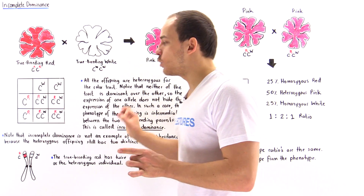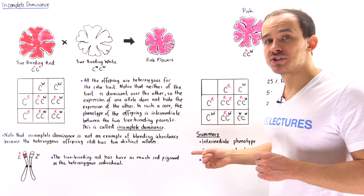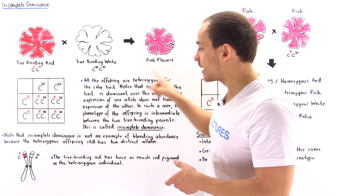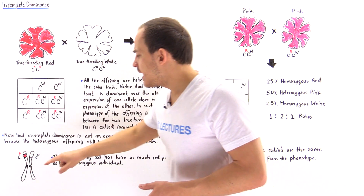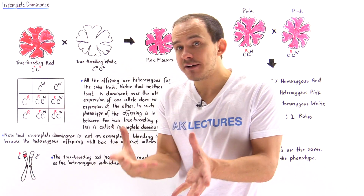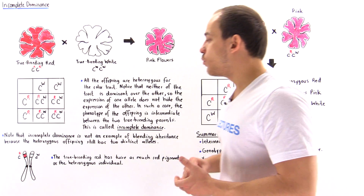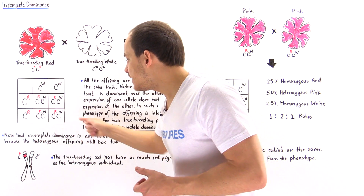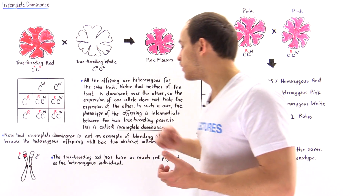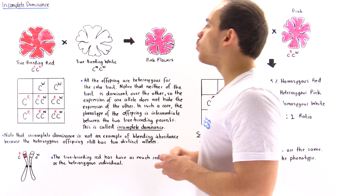It's important to emphasize that incomplete dominance is not the same thing as blending inheritance. That's because when this mode of inheritance takes place, the offspring will still have a pair of chromosomes in which one chromosome has a distinctly different allele than the other. In this case we'll have the red allele, and in this case we'll have the white allele. So incomplete dominance is not an example of blending inheritance because the heterozygous individual produced still has two distinct alleles — that red allele and the white allele.